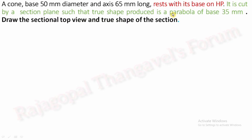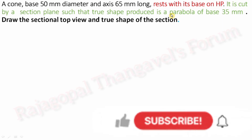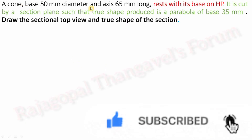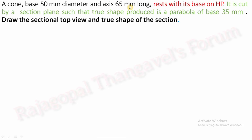If you wish to check a similar kind of problem in square prism, we solved the true shape of section as rhombus and then identified the true inclination of a section plane. Check the description box for a link after watching this problem. Now read the question: a cone base 15 mm diameter and axis 65 mm long rests with its base on HP. It is cut by a section plane such that the true shape produced is a parabola of base 35 mm. Draw the sectional top view and true shape of the section.